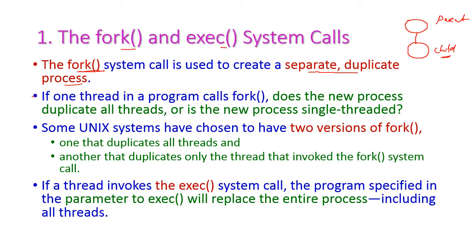The problem is: if a multi-threaded program calls fork, does the new process duplicate all the threads, or is the new process single-threaded? Whether the new fork system call will create duplicates of all the threads or only one thread?